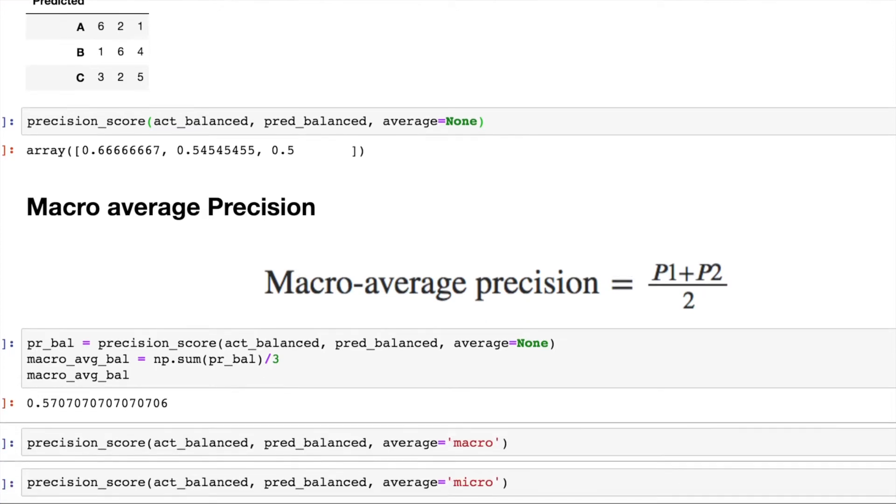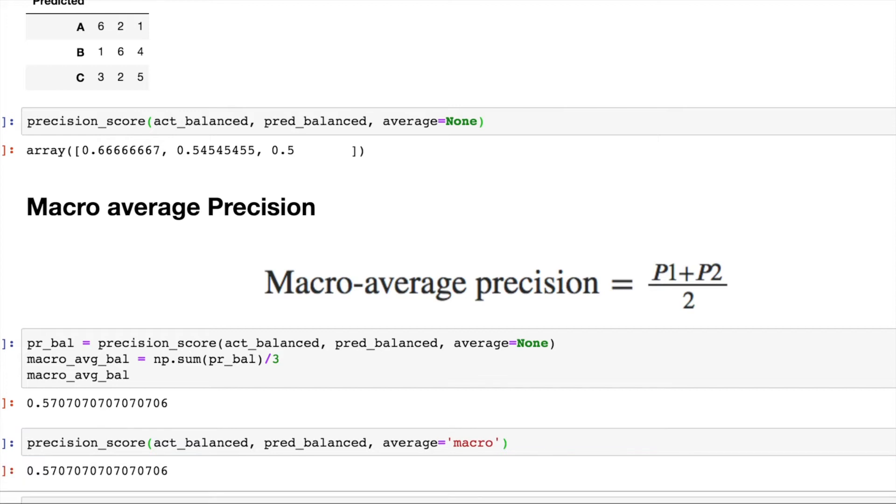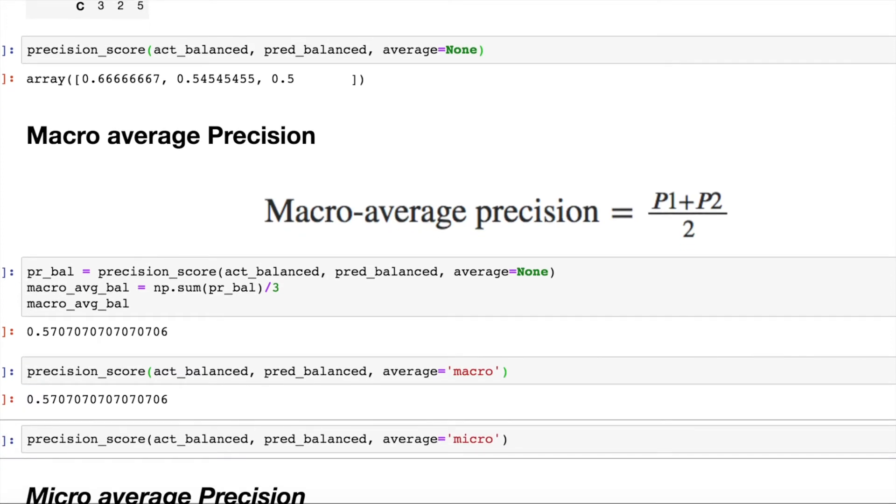So now the macro average for precision in our case, if I do it using normal numpy and python comes out to be 0.57. And there is an option in the library itself, wherein you can just specify what kind of an average you want. If I specify macro, I'll get the same value which is 0.5707.